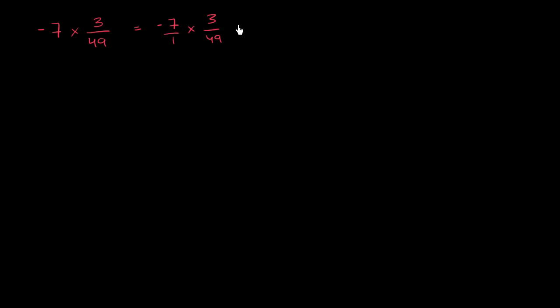Now we can multiply the numerators. So the numerator is going to be negative 7 times 3, and the denominator is going to be 1 times 49. And this is going to be equal to, 7 times 3 is 21, and one of their signs is negative. So a negative times a positive is going to be a negative. So this is going to be negative 21.